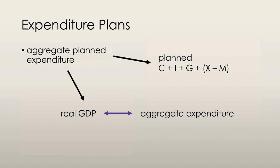Aggregate planned expenditure is the sum of planned consumption, investment, government spending, and exports minus imports. If you think about it, C+I+G is equal to real GDP. So when we talk about planned expenditure, because it's the expenditure method of calculating real GDP, this is aggregate planned expenditure. There's a two-way link between aggregate expenditure and real GDP: an increase in real GDP will increase aggregate expenditure, and an increase in aggregate expenditure will increase real GDP — it works both ways.